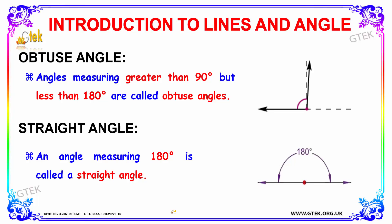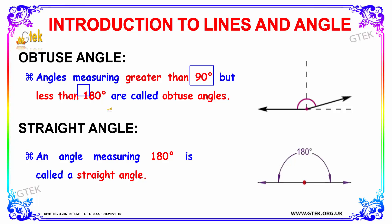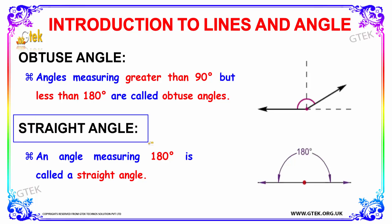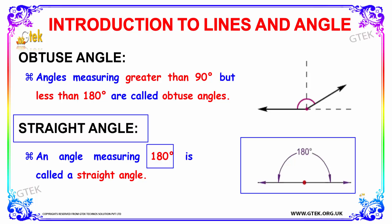The next type is obtuse angle — angles measuring greater than 90 degrees but less than 180 degrees are called obtuse angles. Then there is straight angle — an angle measuring exactly 180 degrees is called a straight angle.